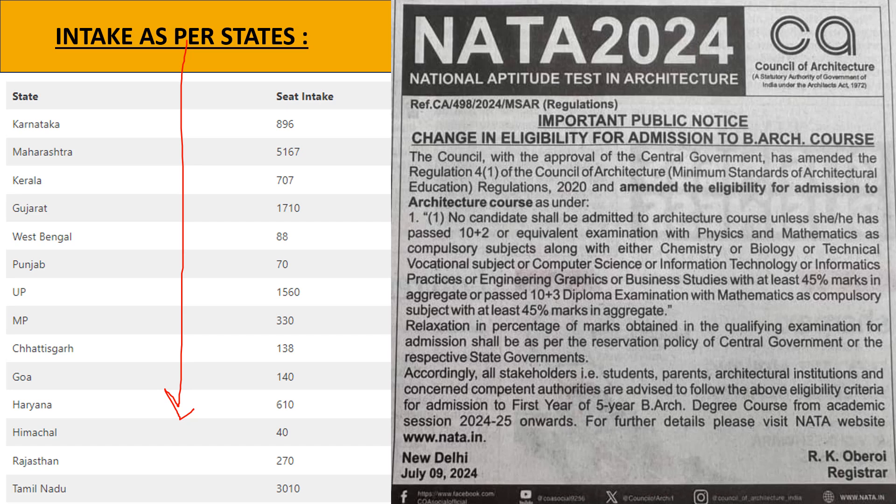I hope you have heard about the new update: the 50% criteria is gone and they have reduced it to 45 marks aggregate of all subjects — physics, maths, and a third subject which can be chemistry, biology, technical, vocational subject, or computer science. It is not mandatory to only have chemistry; it can be anything. This is the update from NATA 2024. I was waiting for this update before making this video, though I am a bit late — I hope this video helps you.